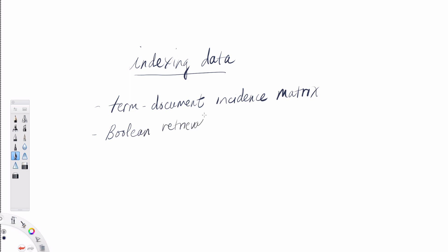Boolean retrieval is really just a simple idea — we combine terms with Boolean operators. Think terms plus AND, OR, and NOT. So if we want to search our documents using a form like 'baseball AND basketball' or 'Sally AND James', then we're going to be supporting a Boolean retrieval model for those types of queries.